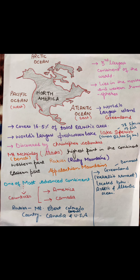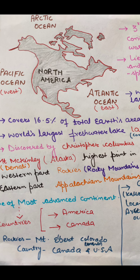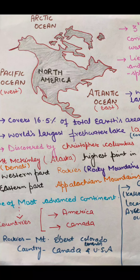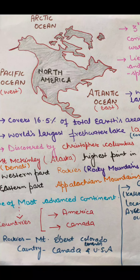North America is the third largest continent of the world. As you can see on the map, North America is surrounded by water bodies on three sides. On the east side it is surrounded by the Atlantic Ocean, on the north side by the Arctic Ocean, and on the west side by the Pacific Ocean.